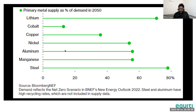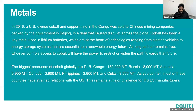EV manufacturers planning to be in business by 2050 need to figure out how to handle the cobalt shortage. In 2016, a US-owned cobalt and copper mine in the Congo was sold to Chinese mining companies backed by the Beijing government, causing disquiet globally. Cobalt is a key metal used in lithium batteries — the heart of technologies ranging from electric vehicles to energy storage systems essential to a renewable energy future. Whoever controls access to cobalt will have the power to restrict or widen the path towards that future.